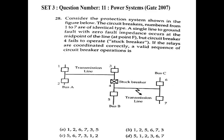A single line diagram of the system is given. We can observe three different buses: bus A, bus B, and bus C. In bus A we have two breakers, 1 and 2. In bus B we have three breakers: 3, 4, and 5. In bus C we have two breakers, 6 and 7. The transmission line is connected between bus A and bus B, and another transmission line between bus B and bus C.